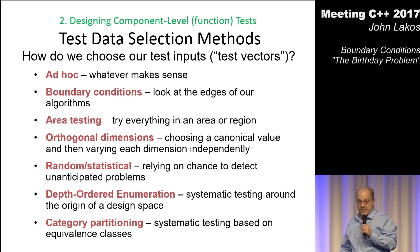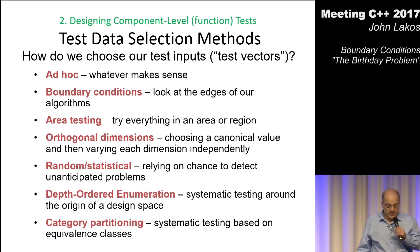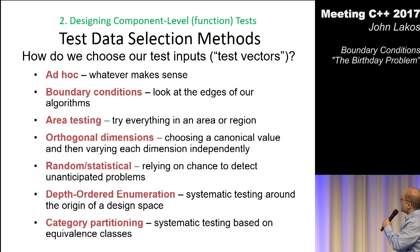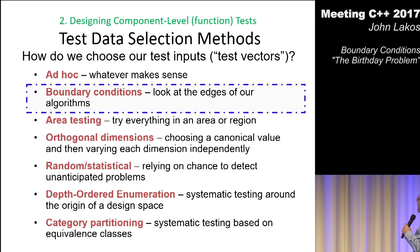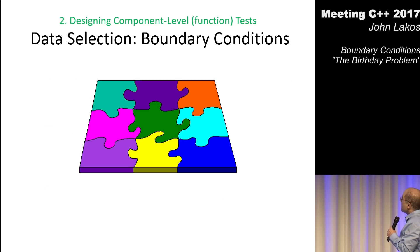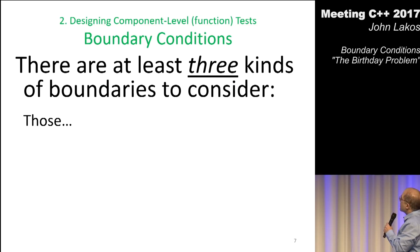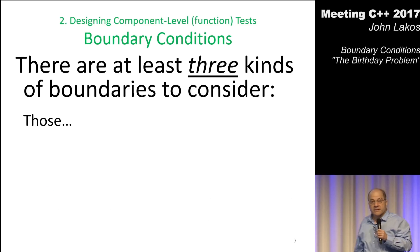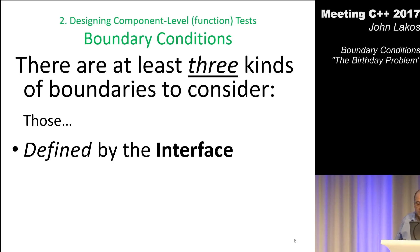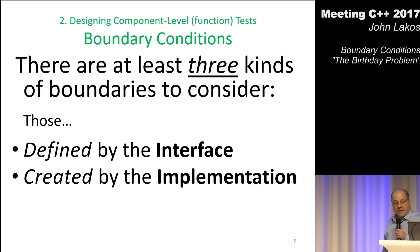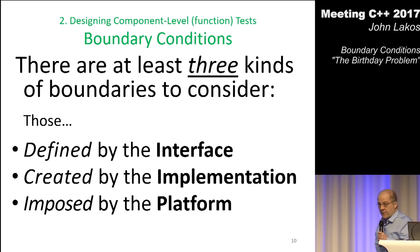The first volume is only through Chapter 3, so you can imagine they're fairly long chapters. We're going to talk about boundary conditions, because that's something we need to pay attention to when testing our code. It turns out that boundary conditions are quite interesting because there are, like many things, three kinds: those defined by the interface, created by the implementation, and imposed by the platform.